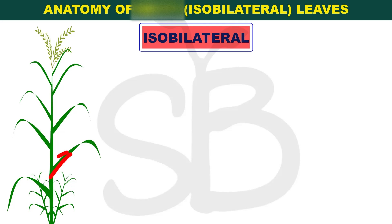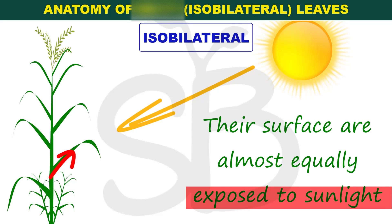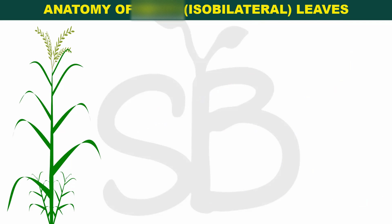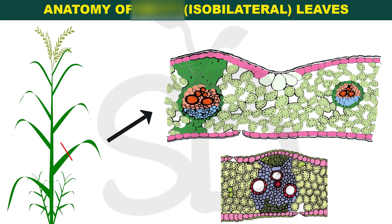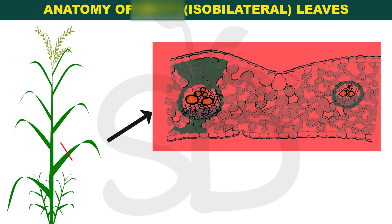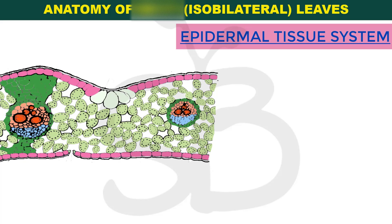This leaf's surfaces are almost equally exposed to sunlight, so this leaf is called an isobilateral leaf. We have a monocot leaf section to explain. We have to explain this diagram because we will discuss the characters visible in this diagram for the monocot leaf section.